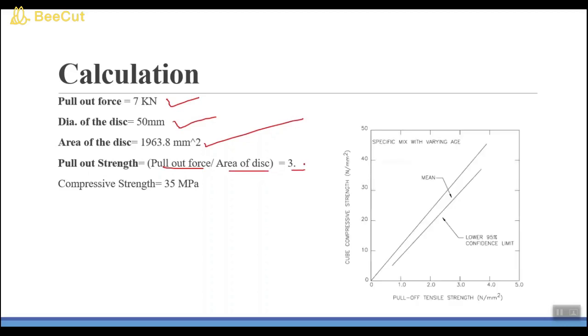Now I will use the calibration curve of pullout apparatus. On x-axis I have pullout strength and on y-axis I have the compressive strength of the concrete. So the pullout strength is around 3.5. First I have to draw a line, then this. The value is somehow 25 MPa. So this is how we find the compressive strength of concrete using pullout method.